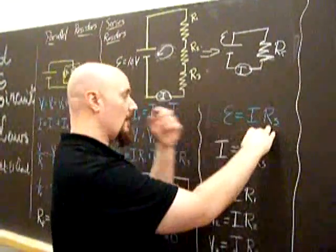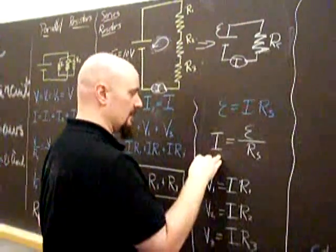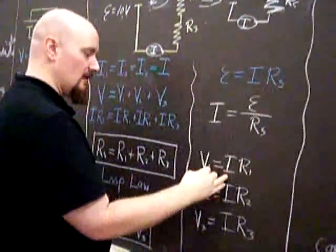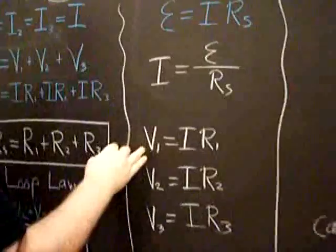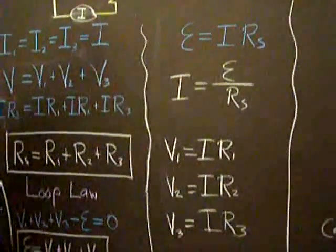So we can now measure the RS, measure the EMF. We can now calculate the resistance, the current. And then we can use this current with the three resistances to calculate our theoretical values for V1, V2, V3, see if that matches up with what you directly measure.